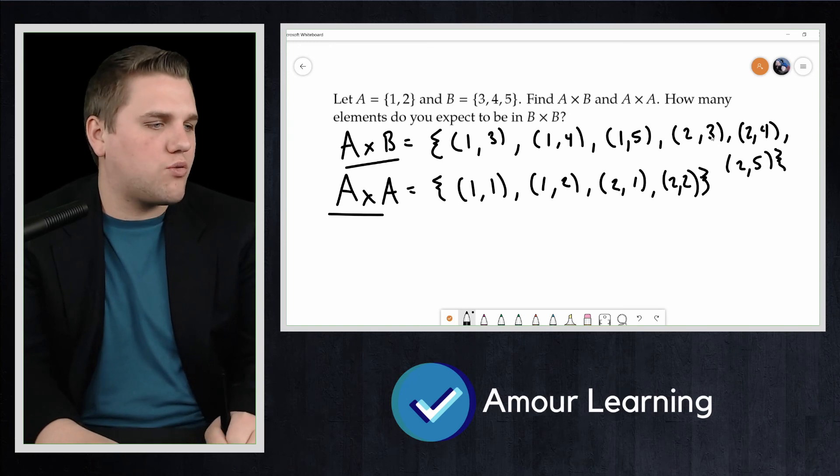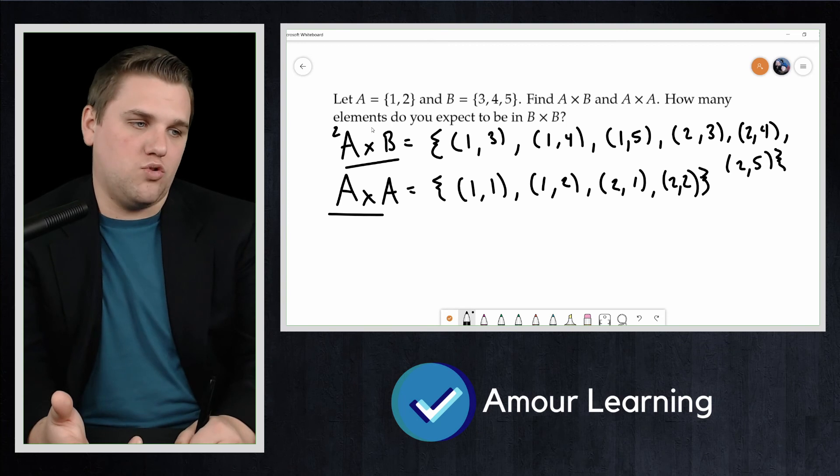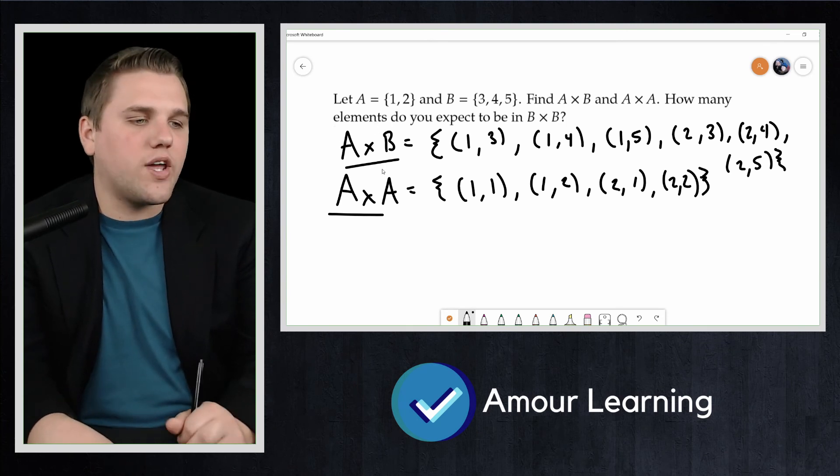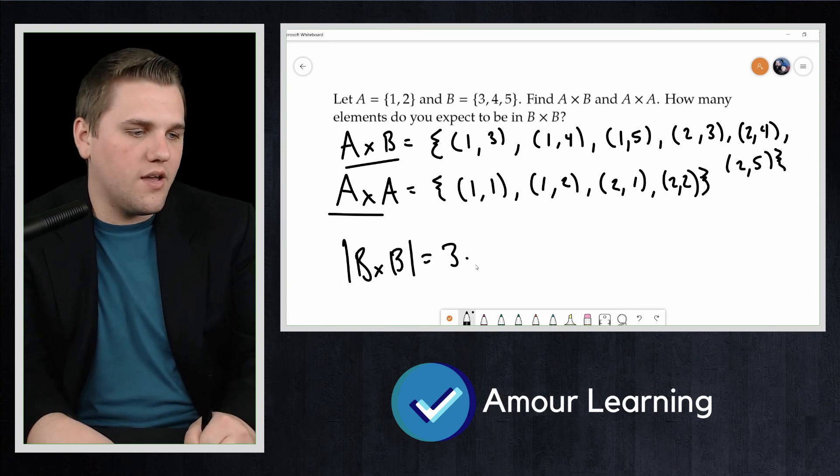For A cross B, we have 1, 2, 3, 4, 5, 6 elements, which just happens to be 2 times 3. And so you can expect that the size of B cross B is going to be 3 times 3, which is 9.